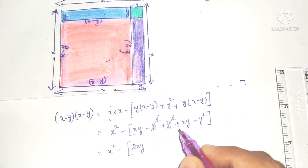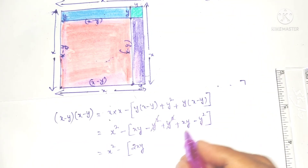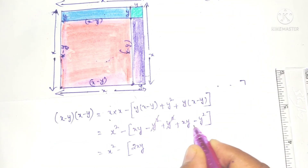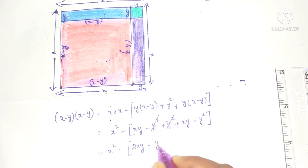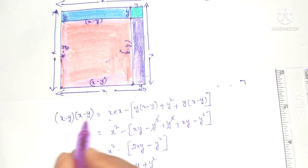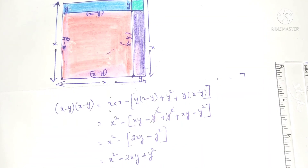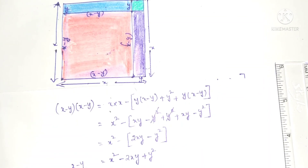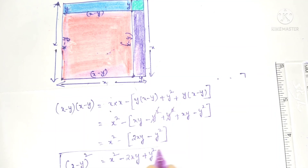The minus y squared and plus y squared get cancelled. So the remaining terms are x squared minus 2xy. And this minus into minus gives plus y squared. So x minus y into x minus y — x minus y whole square — equals x squared minus 2xy plus y squared. This is the formula.